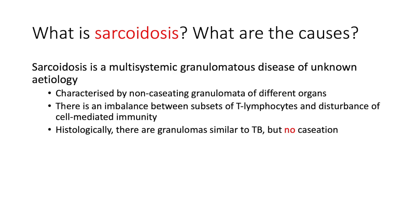Sarcoidosis is characterized by non-caseating granulomata of different organs. Pathologically, there is an imbalance between subsets of T-lymphocytes and a disturbance of cell-mediated immunity, which renders the patient somewhat immunosuppressed.